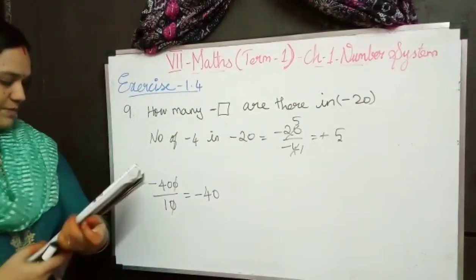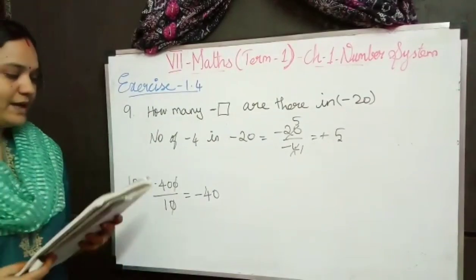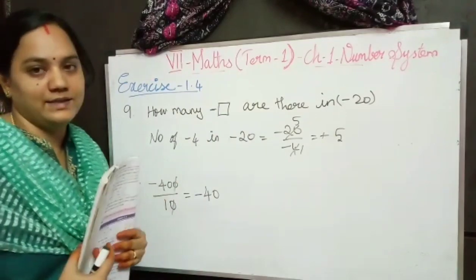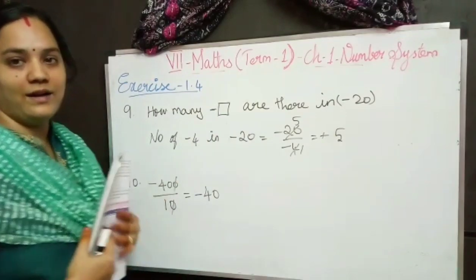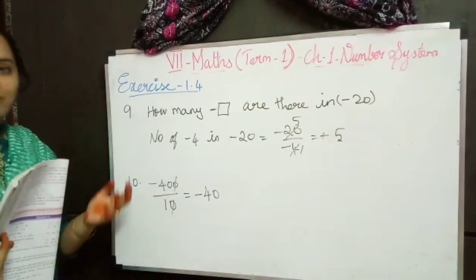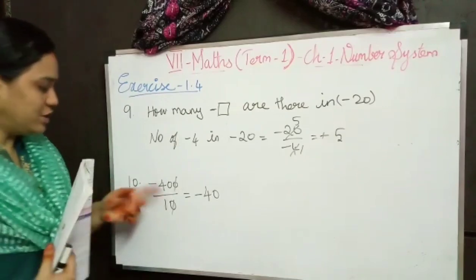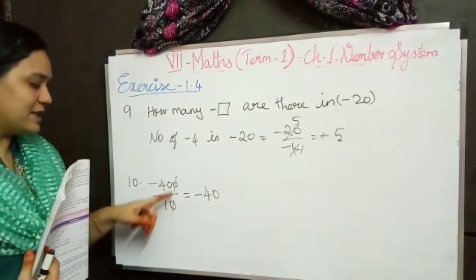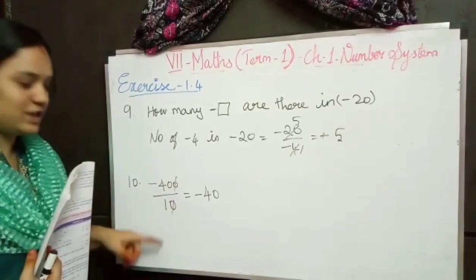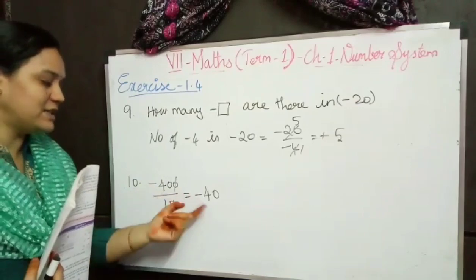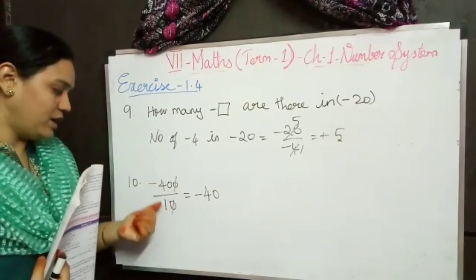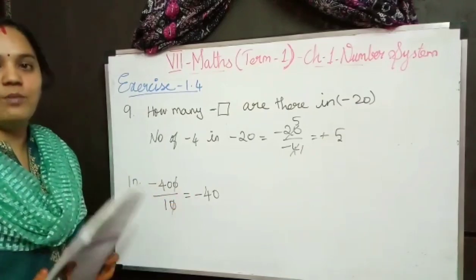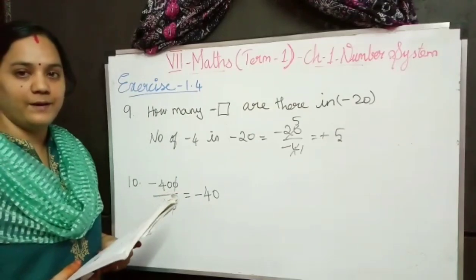Tenth problem: minus 400 divided into 10 equal parts. We divide minus 400 by 10. Cancelling one zero, my answer is 40. Different sign so minus 40.